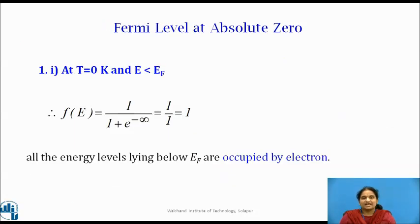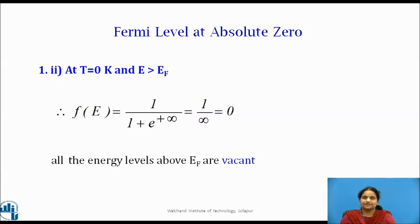Let us now apply the Fermi-Dirac distribution function to the solid, taking the value of temperature as zero Kelvin. For energy levels E lying below E_F, that is E < E_F, the quantity E − E_F is a negative quantity. Therefore, the probability will be equal to one, which indicates that all the energy levels lying below E_F are occupied. For energy levels above E_F, E − E_F is a positive quantity. Therefore, the probability function becomes equal to zero, which means that all the energy levels lying above E_F are vacant at T = 0 Kelvin.